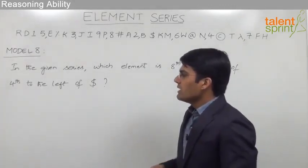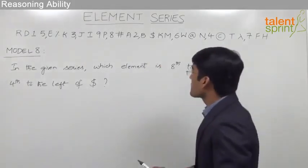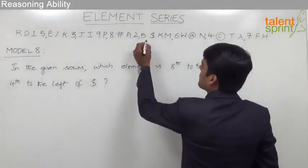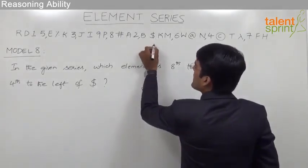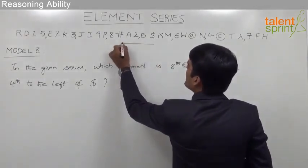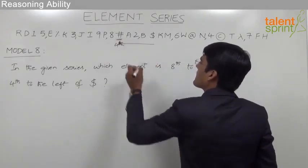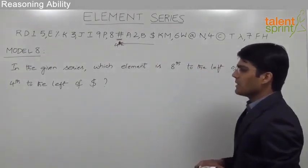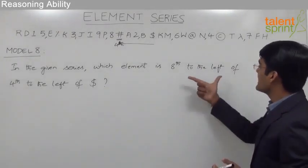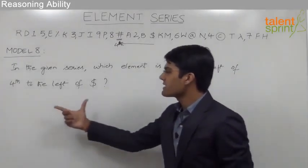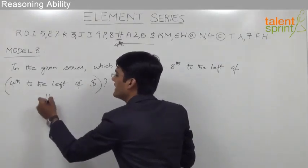Let us first find out the element which is 4th to the left of dollar. The 4th to the left of dollar would be hash. Now the question can be read as: which element is 8th to the left of hash, since the element which comes 4th to the left of dollar is hash.